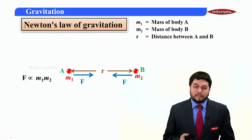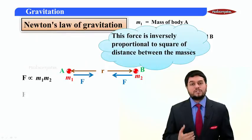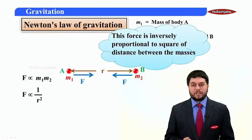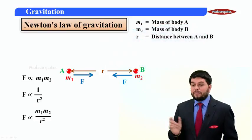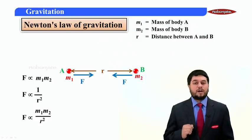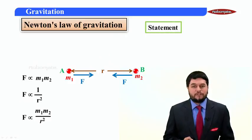And this gravitational force is also inversely proportional to the square of the distance between these two masses. If I just accumulate these two proportionalities, I get this gravitational force is proportional to M1 M2 upon R square. And this will be our fundamental to make a statement of the law.